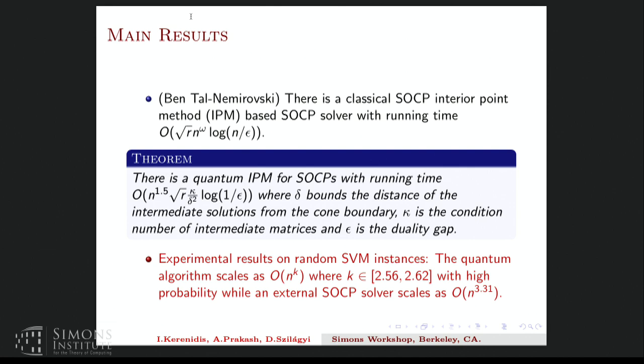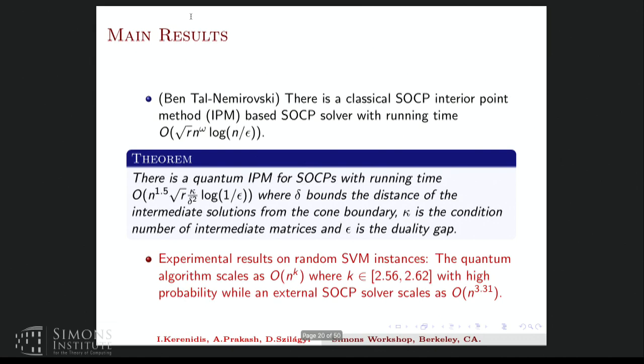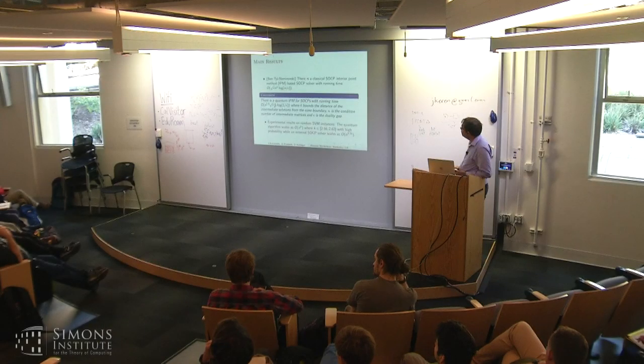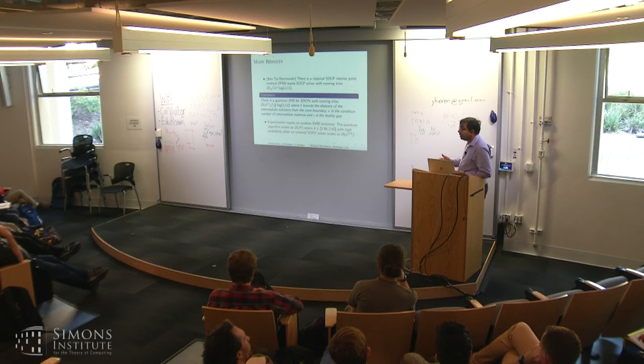So empirically, we find that the quantum algorithm scales as order N to the k, where k belongs to 2.56 to 2.62 with high probability. And the external SOCP solvers scale as N^3.31. So that can be seen as some evidence of polynomial speedup on the quadratic programs in SOCPs. But in theory, the classical one is better. So in theory, if you look at the exponents of N, omega is 2.37 in theory.